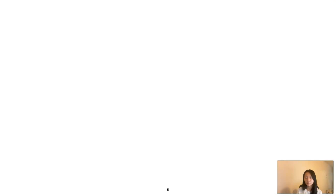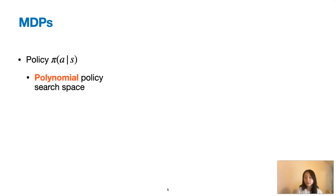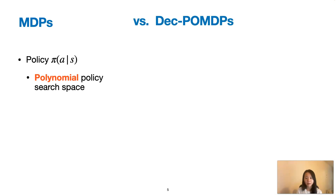A problem with current DECPOMDP learning methods is they require too many samples from the environment. We can see why this is through comparison with the single agent RL setting. In single agent RL, the problem is formalized by MDP. The goal is to find a policy that maps states to actions, which results in a policy search space that is only polynomial in the number of states and actions.